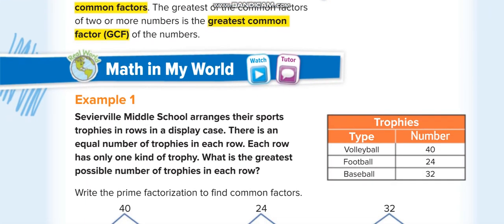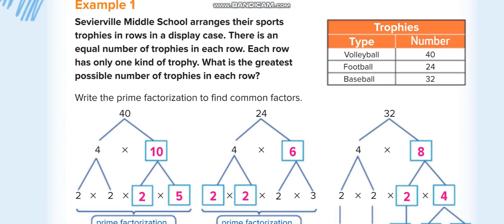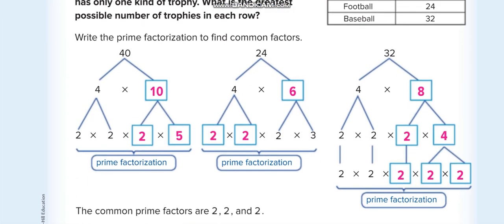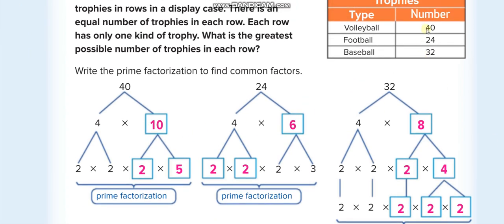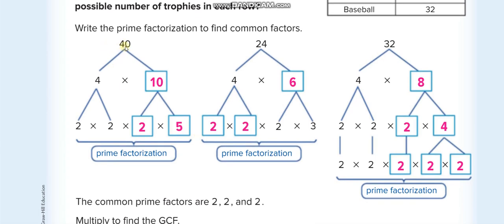To find the greatest common factors of different numbers, we can be given two, three, or four numbers. There are two ways to do this. The first way is prime factorization — for example, with three numbers: 40, 24, and 32, you make the prime factorization of each number.